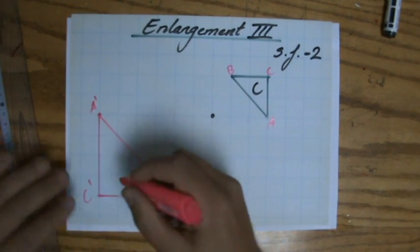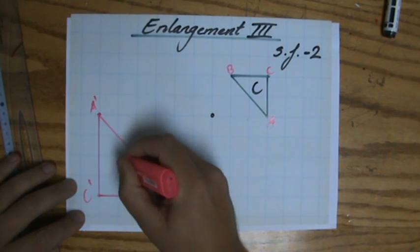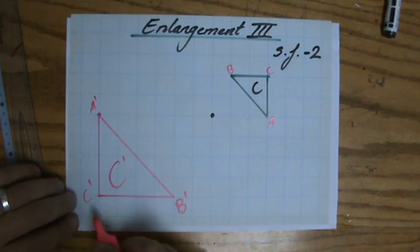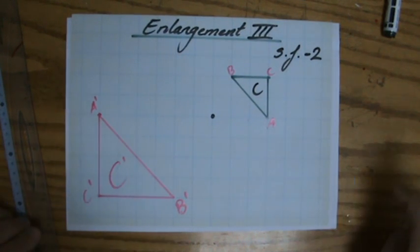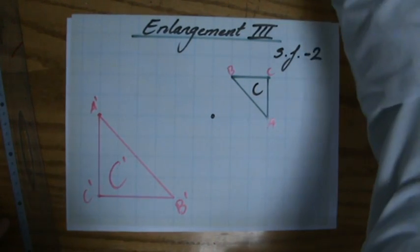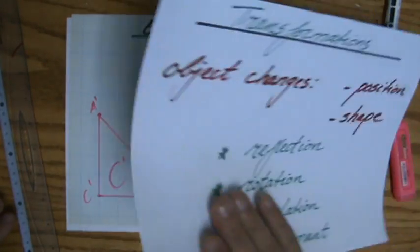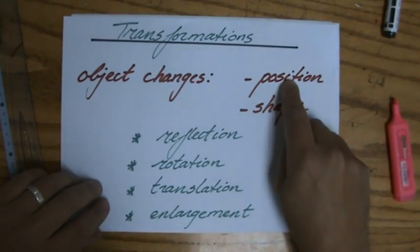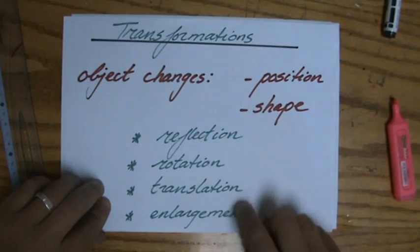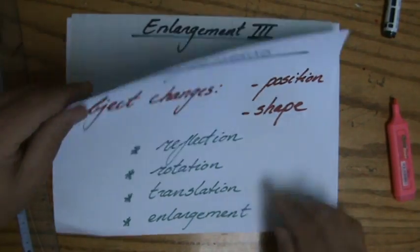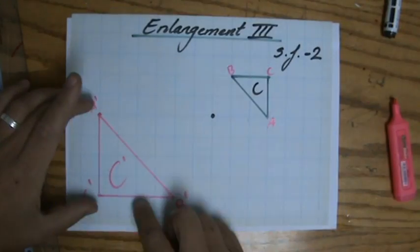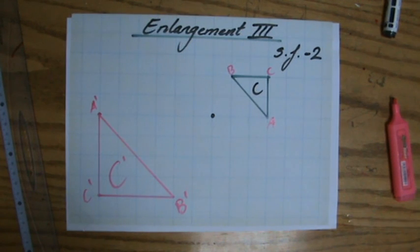There we go. It's going to be the triangle C prime. Please don't confuse that with that particular vertex. As you can see with these types of transformations, the object changes position and shape for enlargement. The position changed and the shape also changed. It became bigger.